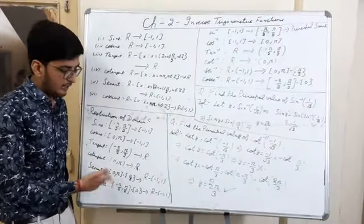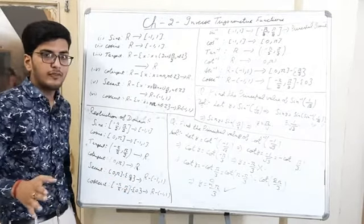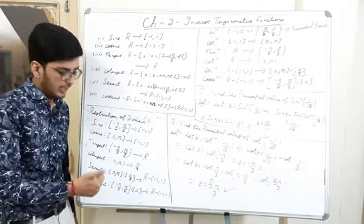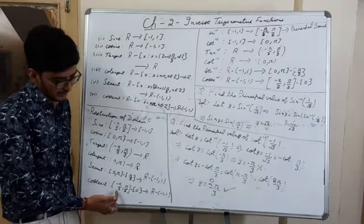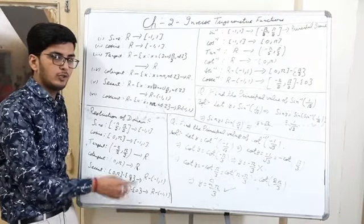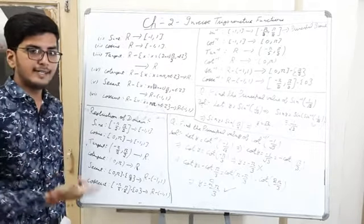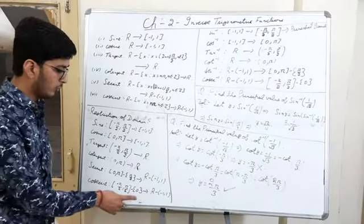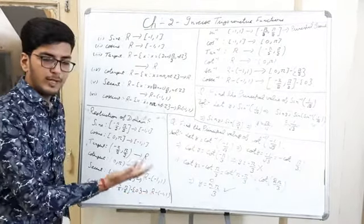Why is π/2 excluded from the domain of secant? Because secant is not defined at π/2 — its original domain excluded all points of the form (2n+1)π/2, which includes π/2. So π/2 must be excluded to keep secant defined. For cosecant, the domain is restricted to [-π/2, π/2] excluding 0, because cosecant is not defined at 0. The range or co-domain remains the same.